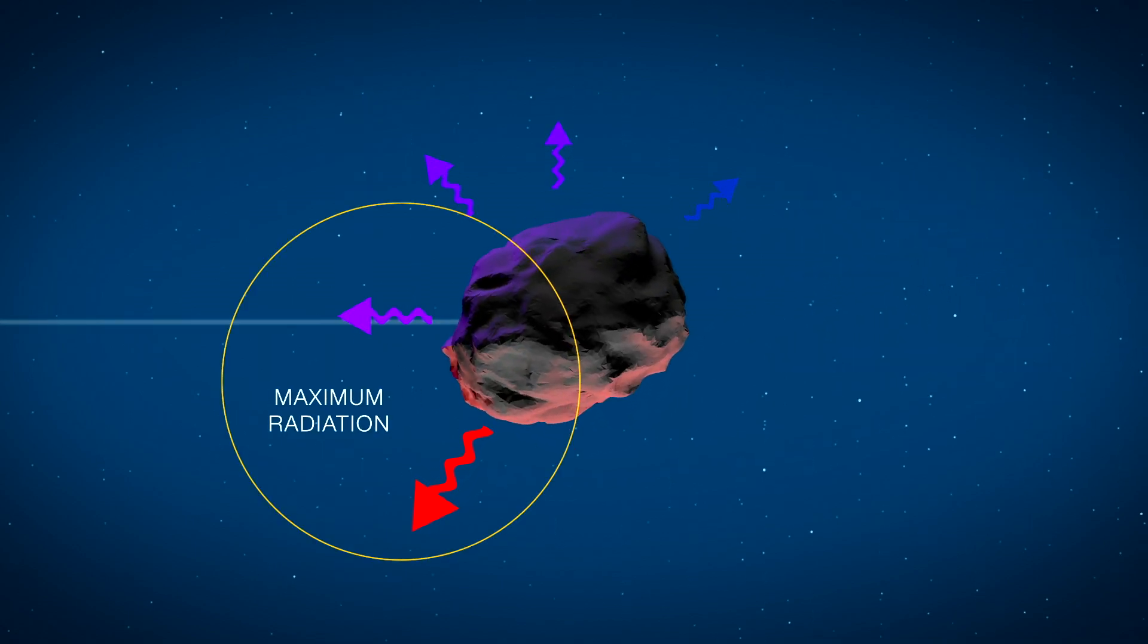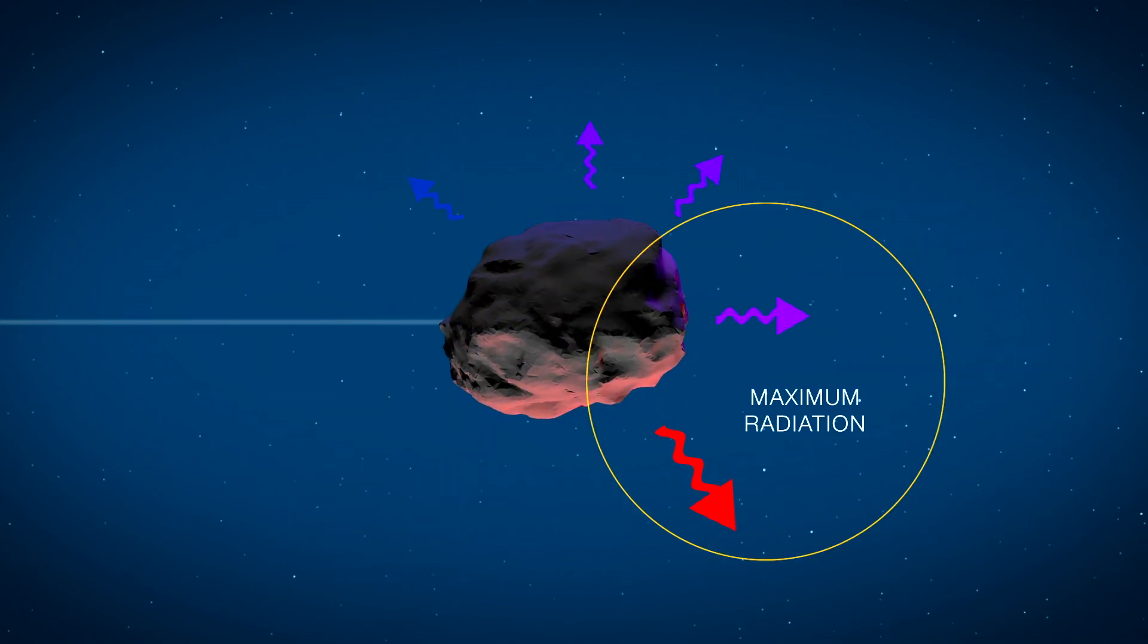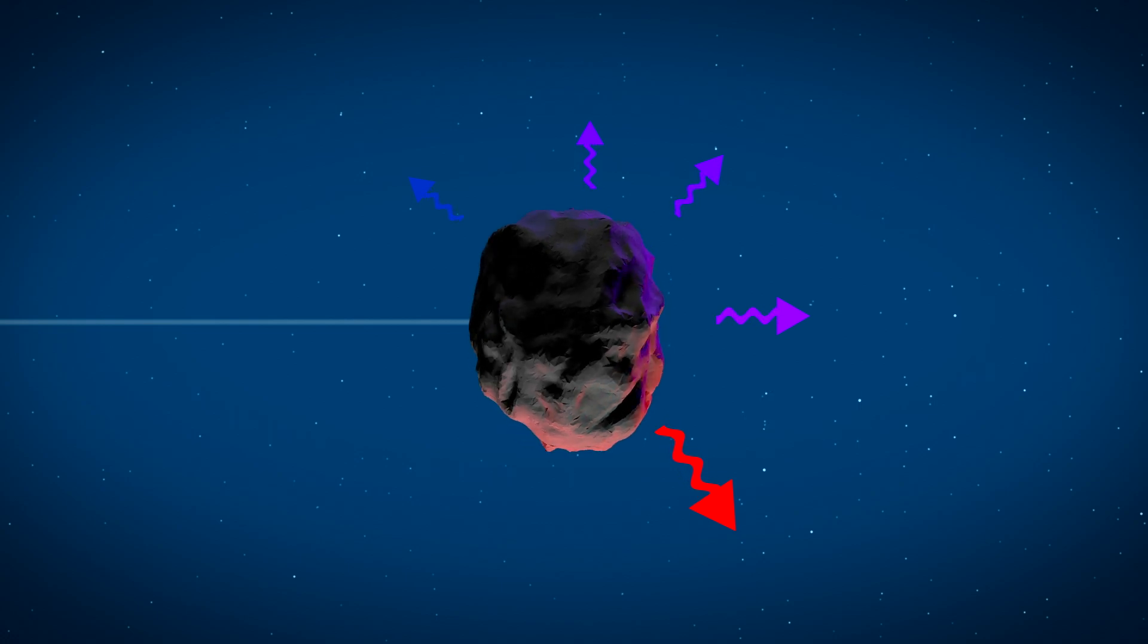Because the surface emits the most heat radiation at the end of the day, the direction the asteroid rotates can ultimately determine what happens in the long run.